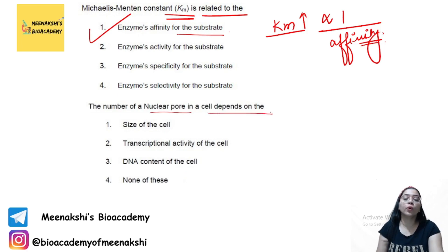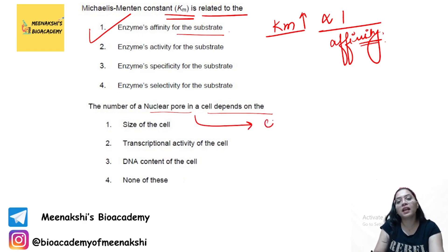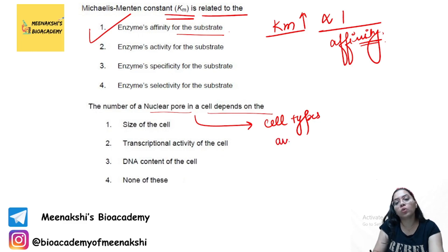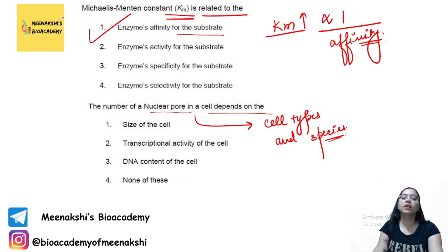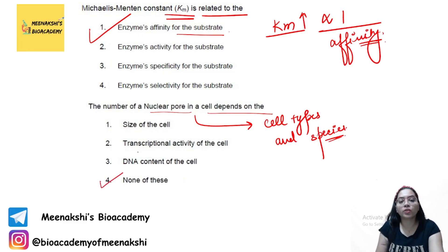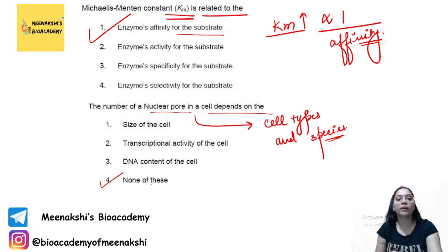The number of nuclear pores in a cell depends on the type of cell and also the species. If the options given are size of the cell, transcriptional activity, or DNA content, the answer will be none of these, because it depends on both cell type and species.